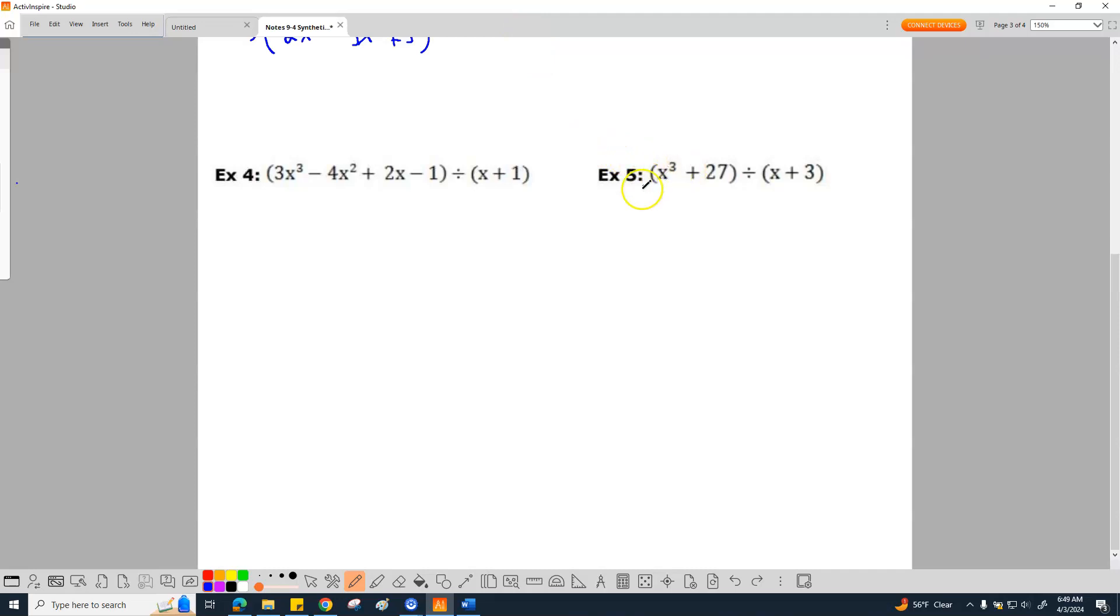Check it out. I'm going to start by rewriting this in terms of long division. So here's what the long division would look like: x plus 3 into—and this is super important—I have my x³. Notice I'm missing my x²s.